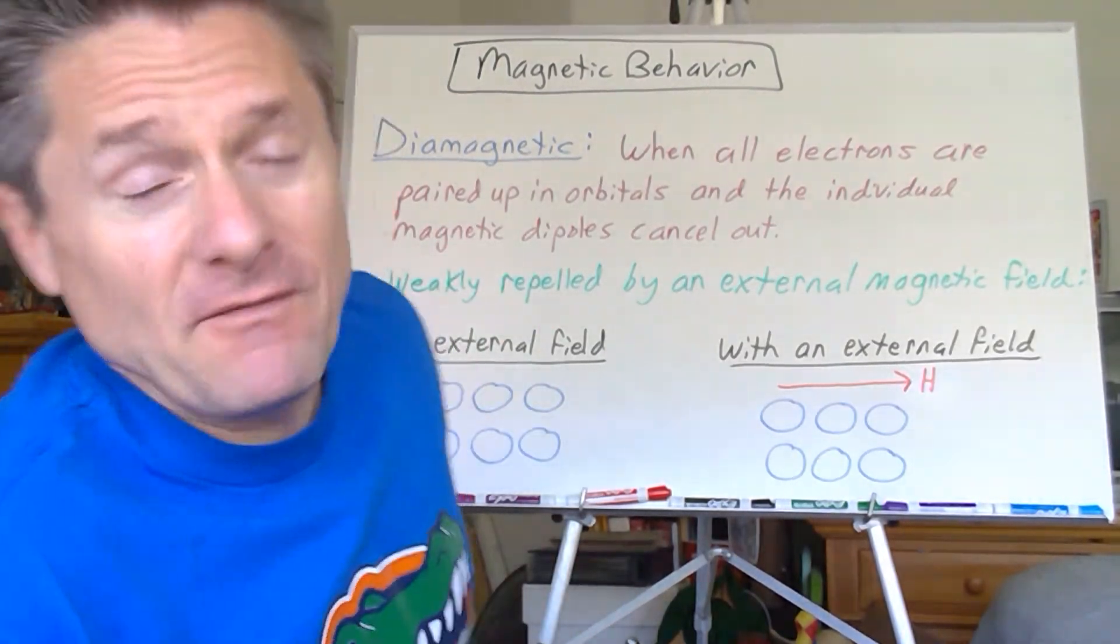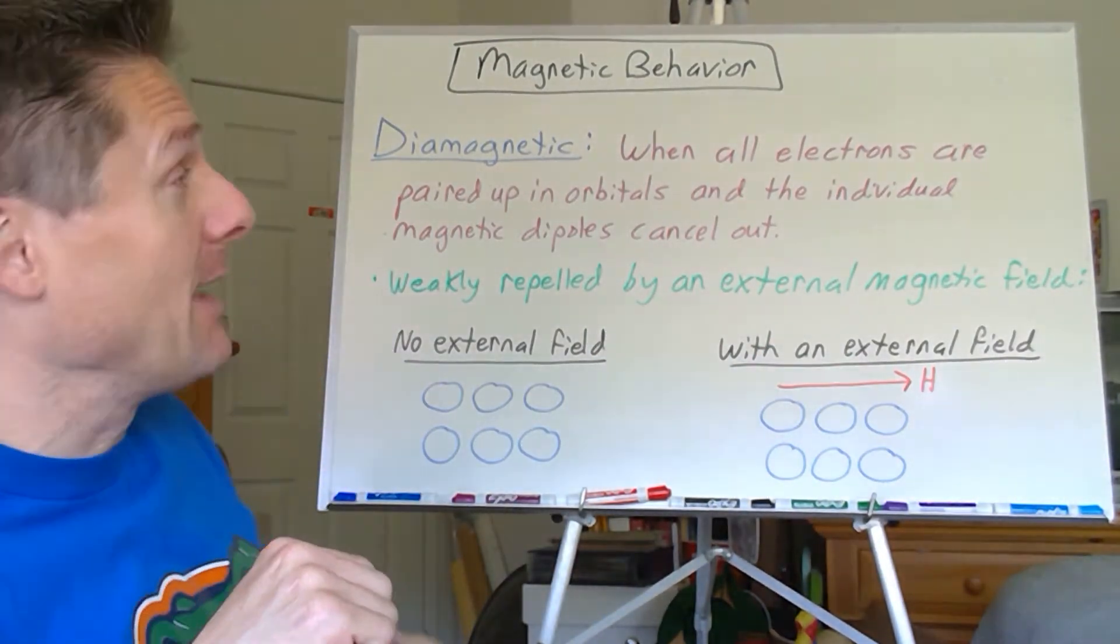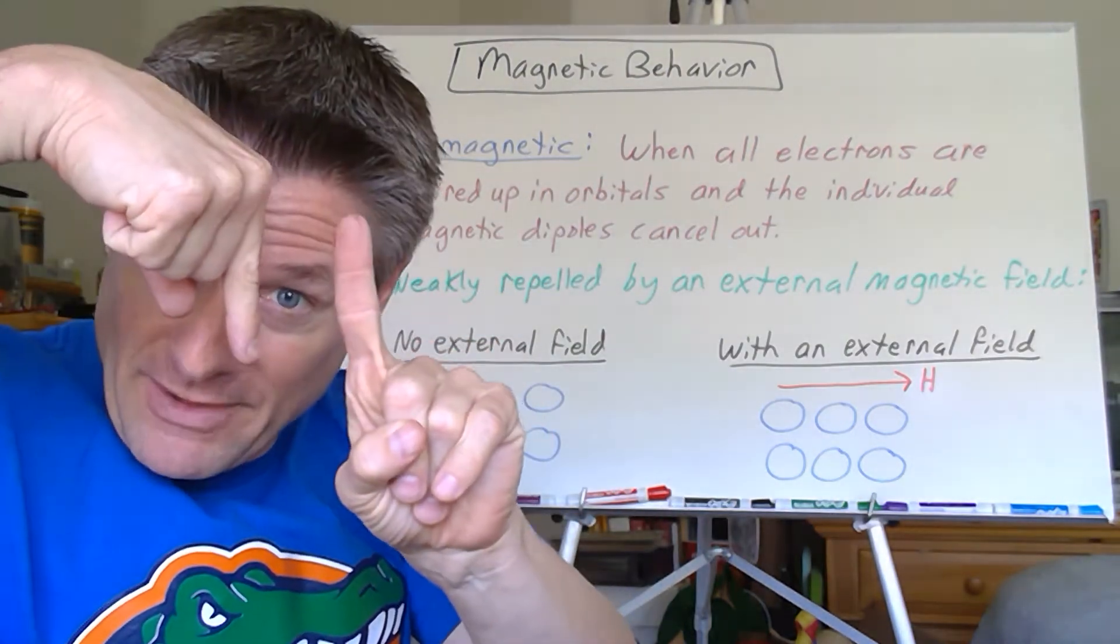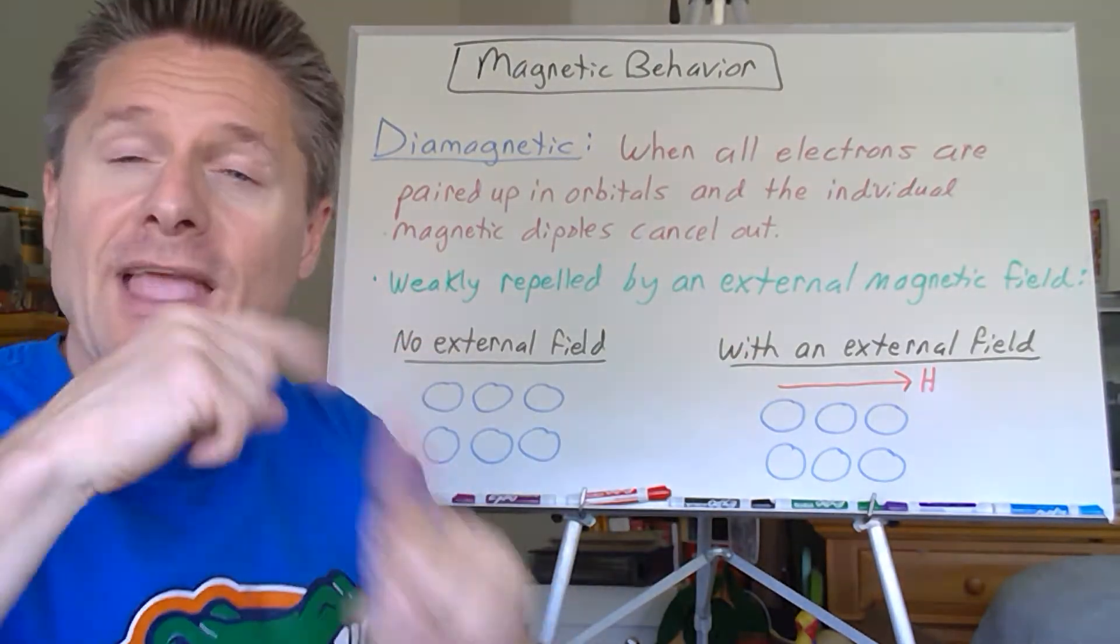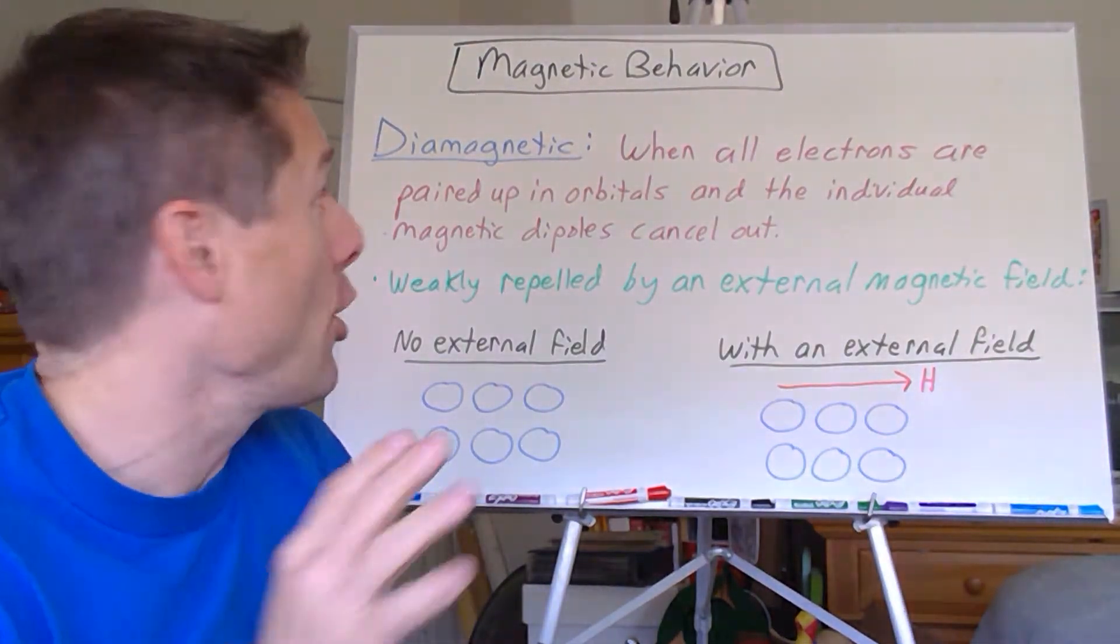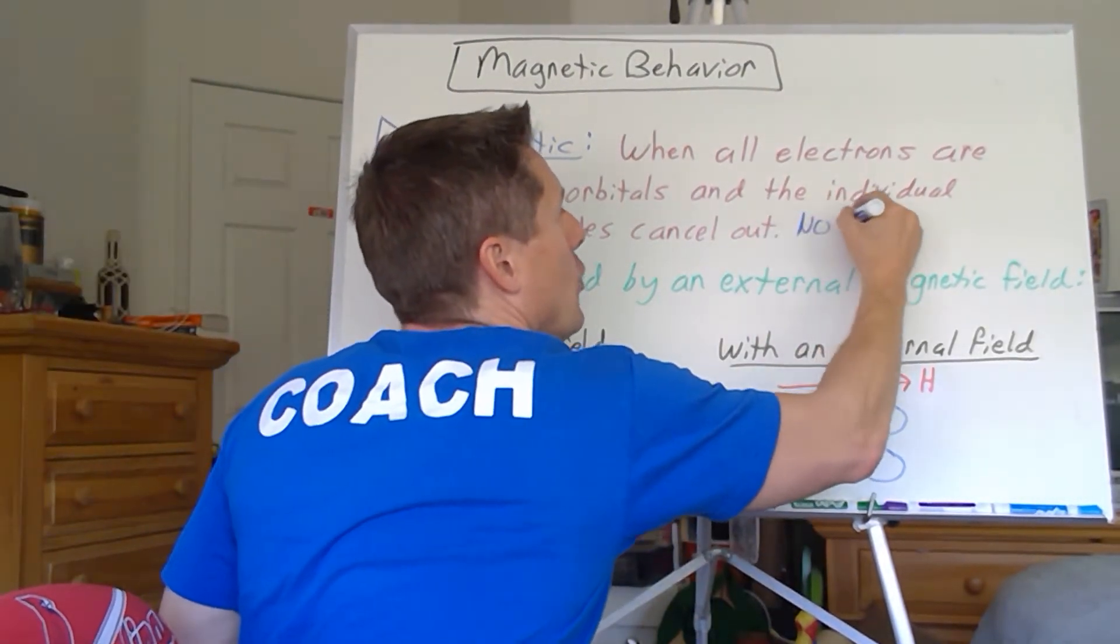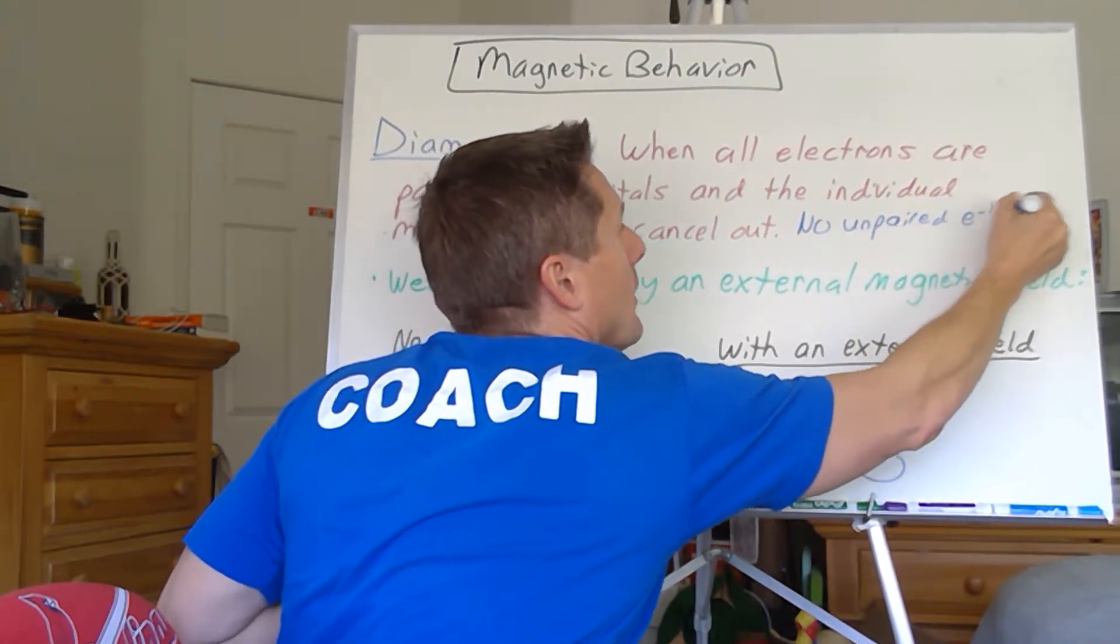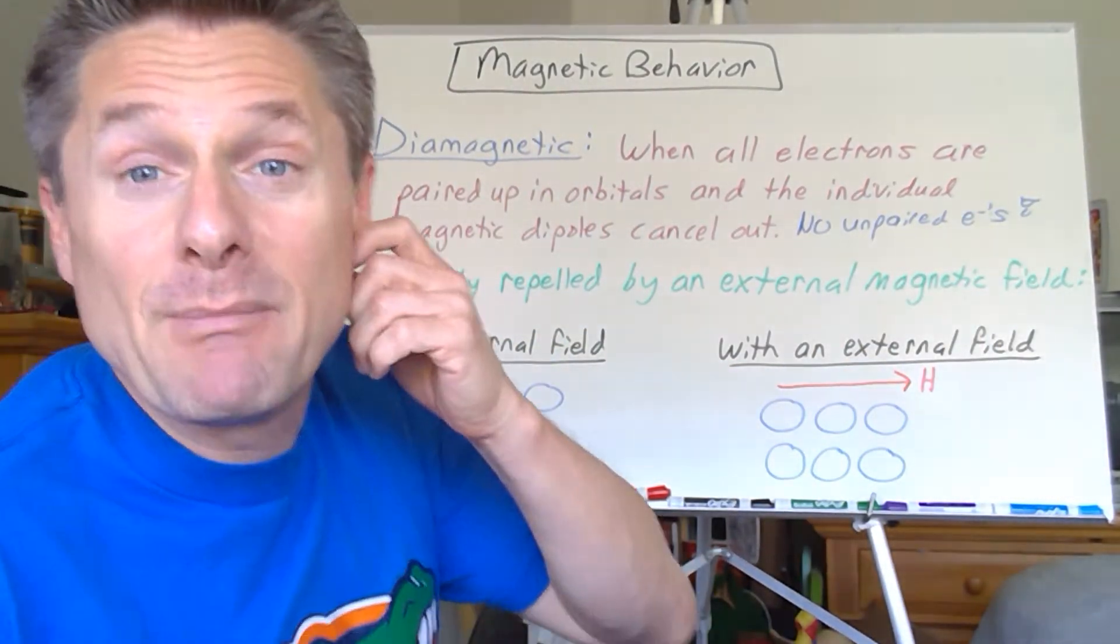Diamagnetic means all the electrons are paired up in the orbitals, so the spin up and spin down cancel out. All those individual magnetic dipoles cancel out. If every single orbital in the entire electron configuration has two electrons in it, there are no unpaired electrons. That is called diamagnetic.